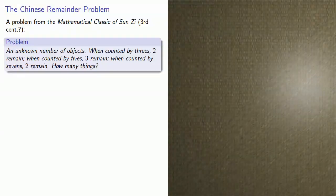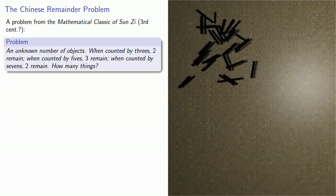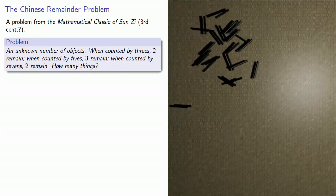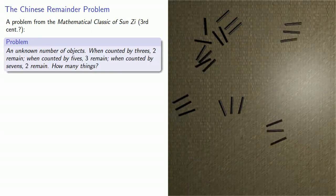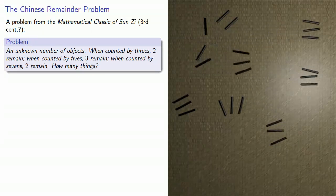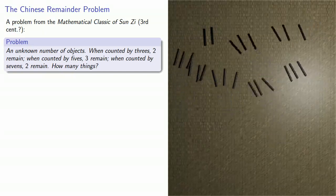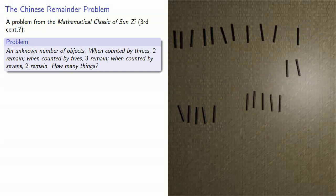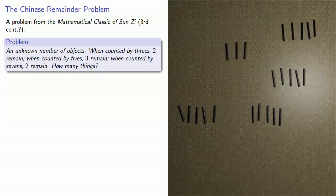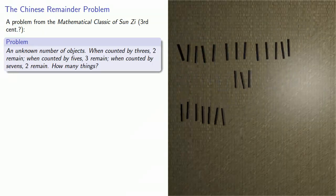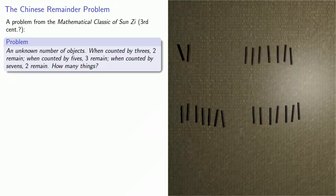A problem from the mathematical classic of Sun-Zi in the third century: an unknown number of objects, when counted by threes, two remain; when counted by fives, three remain; and when counted by sevens, two remain. How many things?